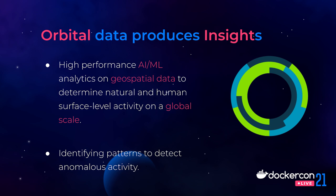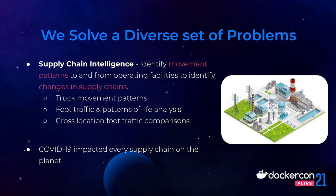More specifically, what type of problems do we solve? Supply chain intelligence is one of the use cases we like to talk about a lot — it's one of our main primary verticals right now. Supply chain intelligence is all about identifying movement patterns to and from operating facilities to identify changes in those supply chains. We can track the movement of trucks from one location to another in aggregate, and the same thing with foot traffic — analyzing aggregate groups of people moving from one location to another and analyzing their patterns of life.